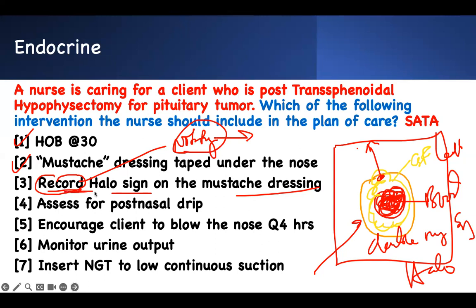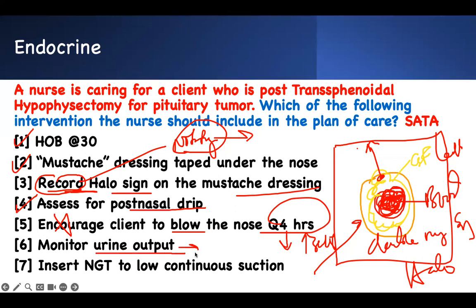Assessing for post-nasal drip is appropriate — if CSF is leaking it's like having a cold; it goes to the back of the throat. However, encouraging the client to blow their nose is wrong. You went through the nose for surgery; blowing will disrupt the repair of the cribriform plate, cause a CSF leak, and increase ICP — do not do this.